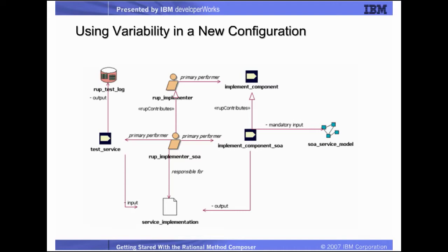In the demo, a new role is created — the RUP implementer for SOA — and it will override or contribute to the base role RUP implementer. We also define two new tasks: implement service, shown here as implement component for SOA, and test service, which are performed by our new RUP implementer for SOA role. The implement component for SOA task has a mandatory input work product of SOA service model, which comes from the RUP SOA plug-in, and it produces the output service implementation. The test service step has a mandatory input of service implementation and an output RUP test log, a base element which comes from the RUP plug-in.